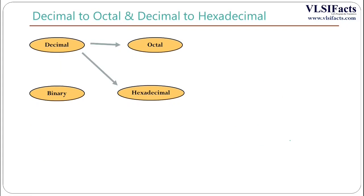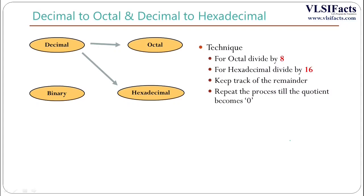Now we will see how to convert a decimal number to its octal or hexadecimal equivalent. For octal conversion, divide the number by 8; for hexadecimal conversion, divide the number by 16. In both cases, keep track of the remainders until the quotient reaches 0.